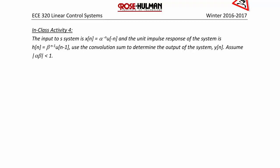Assume that αβ < 1. We have that y[n] = x[n] convolved with h[n], or y[n] = the summation from k = −∞ to ∞ of x[k] · h[n − k].